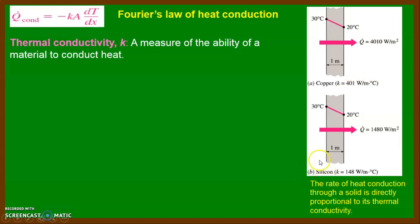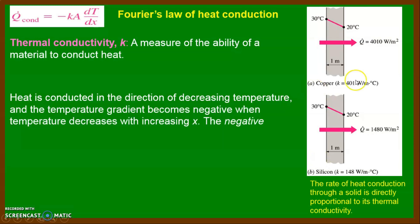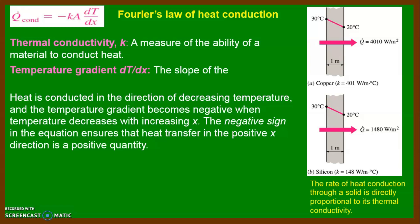Similarly, in example two, I am taking the metal silicon. Heat is conducted in the direction of decreasing temperature, and the slope of the line on the temperature versus thickness graph is negative. That is why the minus sign appears in the equation — it indicates that heat is transferred in the positive direction while the temperature gradient dT/dx is the slope of the line on the T-x diagram.